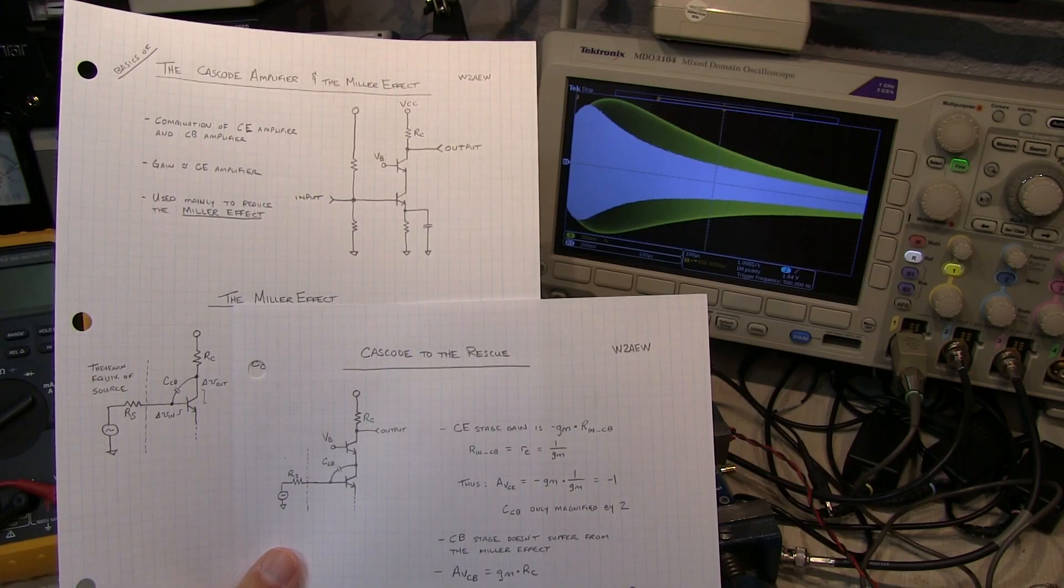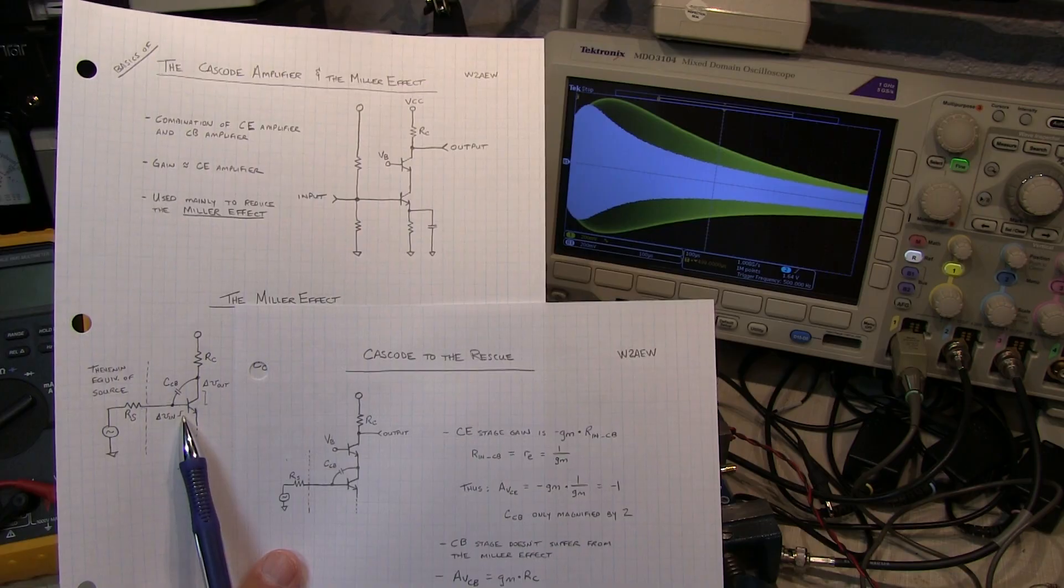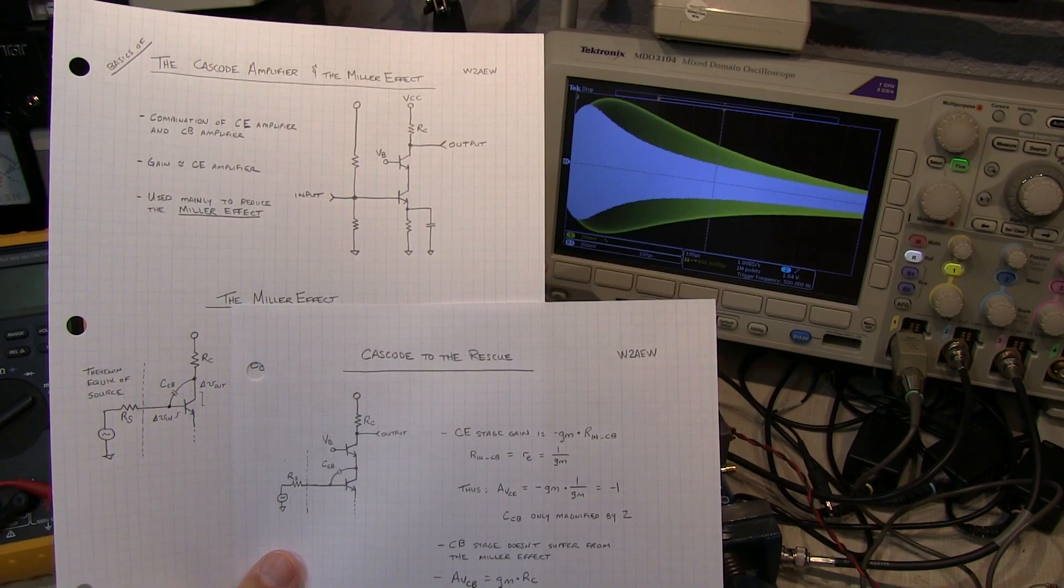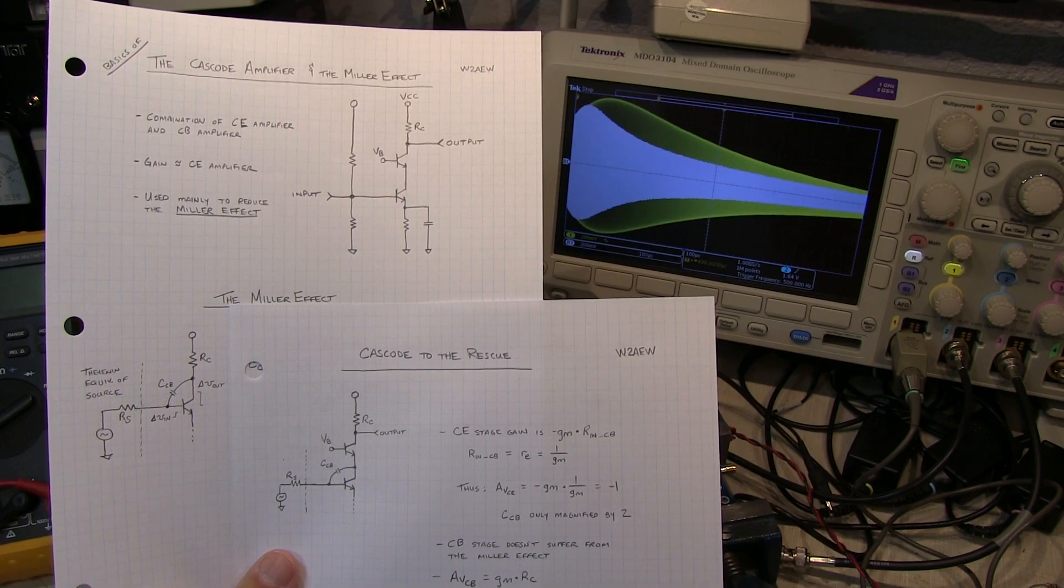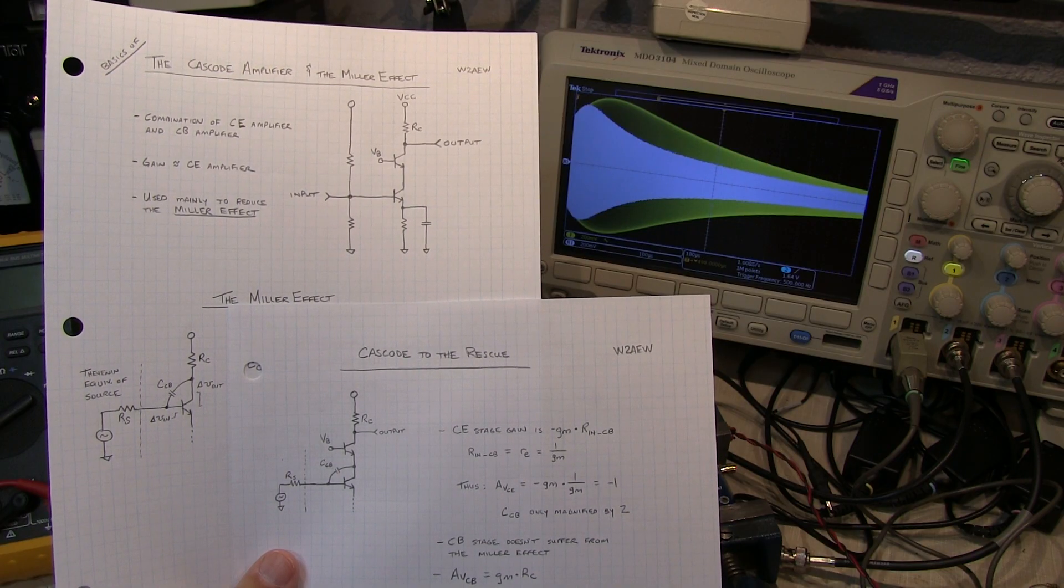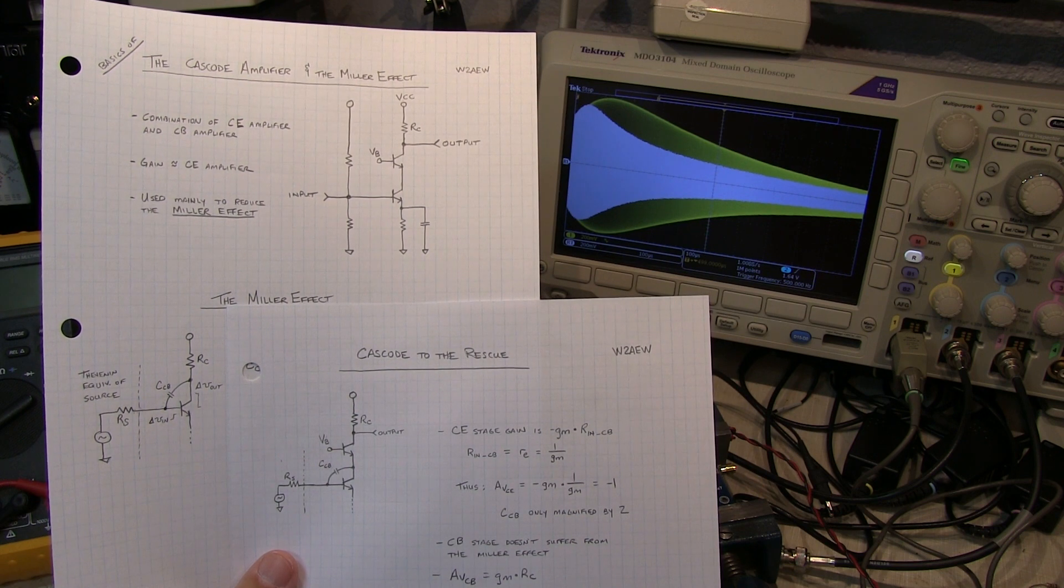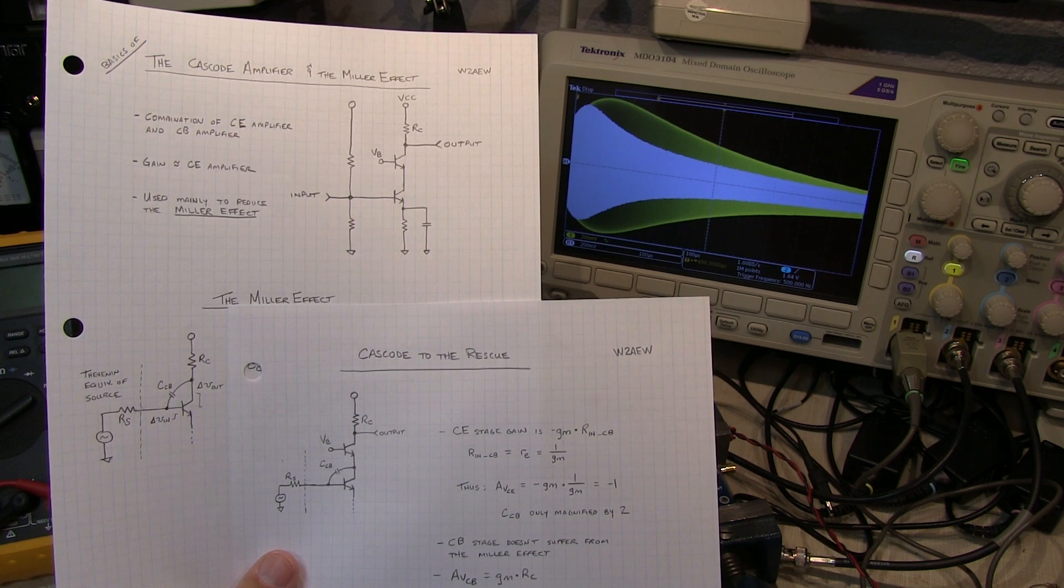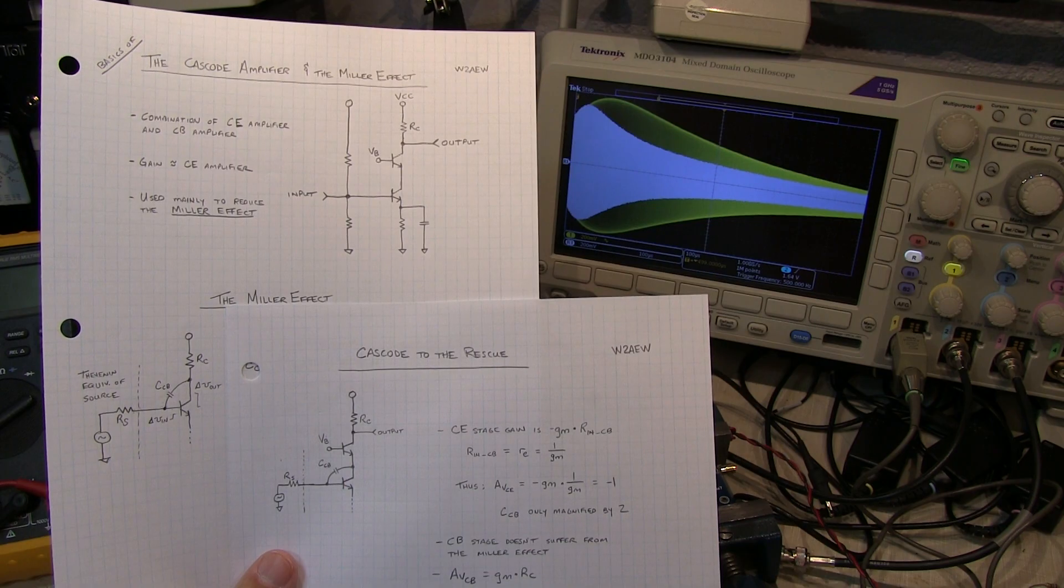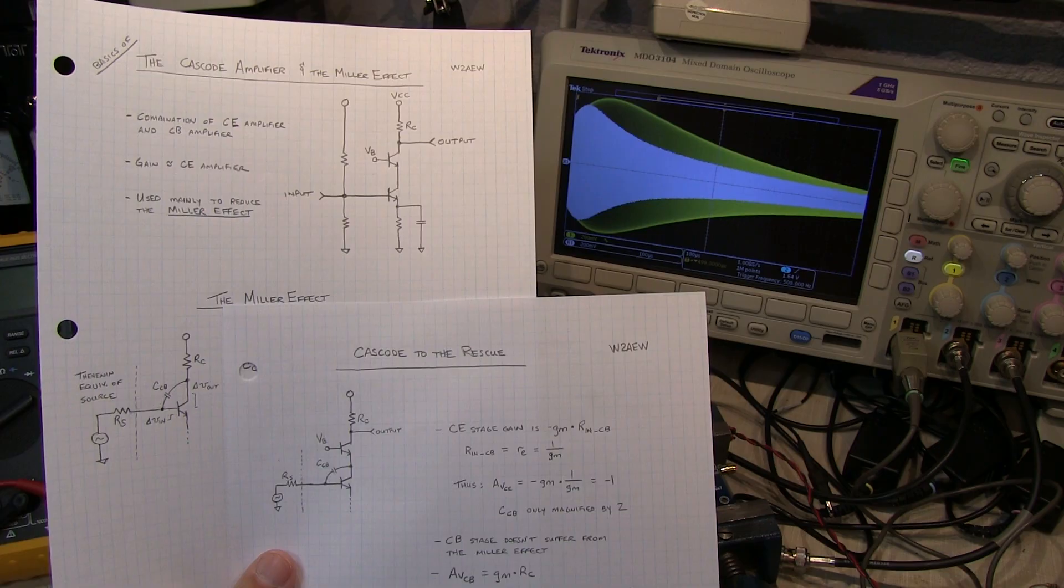Alright, so I hope you learned a little something about what a cascode amplifier is and what the Miller effect is and how the cascode can help alleviate the problems associated with the Miller effect in terms of bandwidth limiting of a simple common emitter amplifier stage. Anyway, thanks again for watching. Comments are always welcome. Again, I'll put the link to Marcus's blog post on his amplifier in the show notes below. And I'll make my hand drawn notes available as a PDF as always. Thanks again for watching. Please subscribe if you haven't done so already. If you like this video, give me a thumbs up and we'll see you next time.